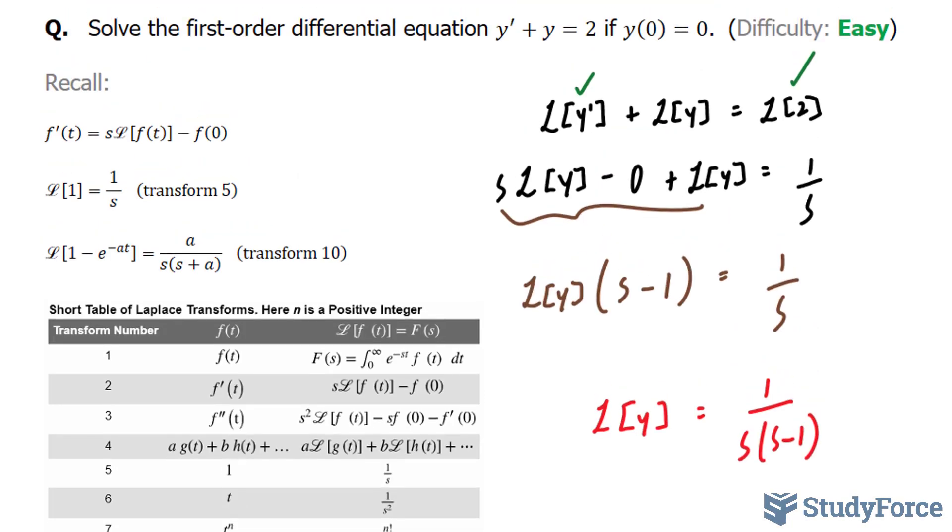Now, something that I didn't consider while I was doing this step is that in transform 5, we have f of t is equal to 1. But, in our case, we have 2. So, to compensate for that 2, what I should have done is multiply this by 2, this by 2, and subsequently this by 2.